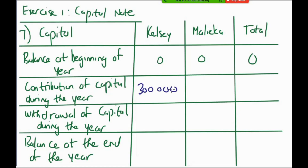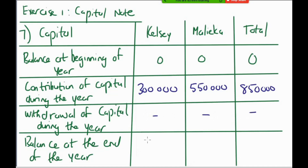Some newer formats say 'balance at the beginning of the year' rather than 'balance at the end of the previous financial year.' Kelsey contributed 300,000 during the year and Malika contributed 150,000 plus 400,000 = 550,000. In total, 850,000 was contributed during the year. There was no withdrawal of capital, so the balance at the end of the financial year is 300,000 for Kelsey, 550,000 for Malika, totalling 850,000.